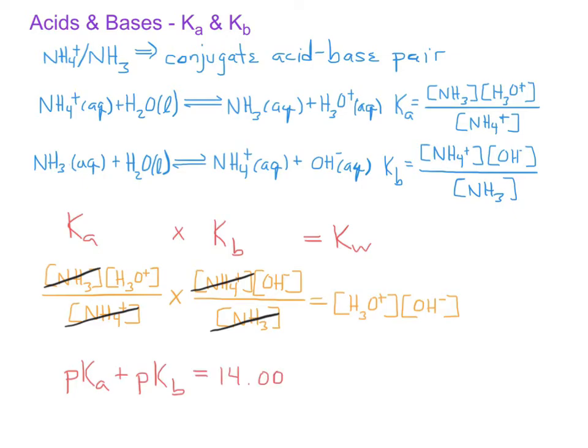We could then use these two relationships, either the Ka times the Kb or the pKa plus the pKb, to find the K values or pK values for whichever of the conjugate acid-base pair we do not yet know.